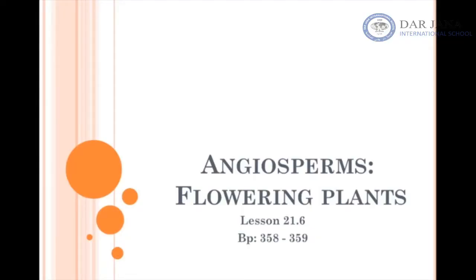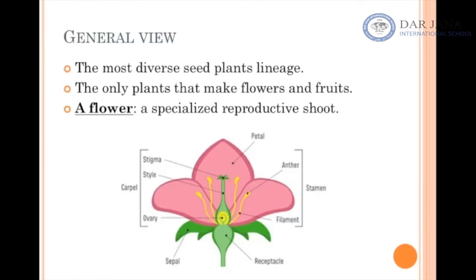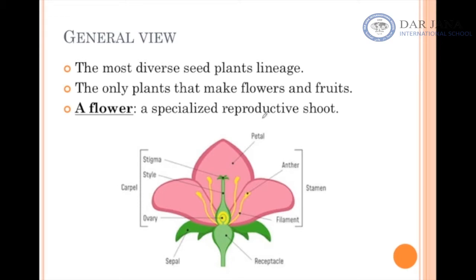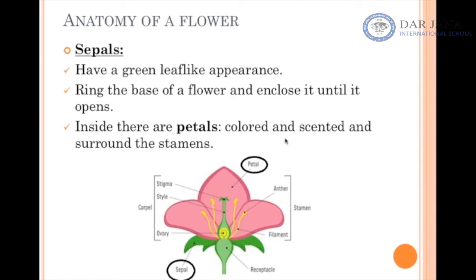This is 21.6 Angiosperms. We start with an overview: angiosperms are the most diverse among the seed plant lineages, and angiosperms are the only plants that make flowers and fruits. What is a flower? A flower is a shoot — a reproductive shoot. A shoot means an organ system, so a flower is an organ system specialized for reproduction.